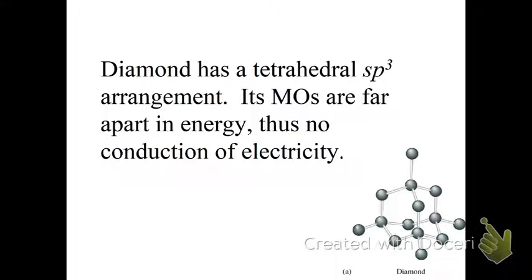The diamond has a tetrahedral sp³ arrangement. Its molecular orbitals are far apart in energy, thus no conduction of electricity. So there's an example of the way that they're bonded together. They have that tetrahedral arrangement when they're bonded to each other.